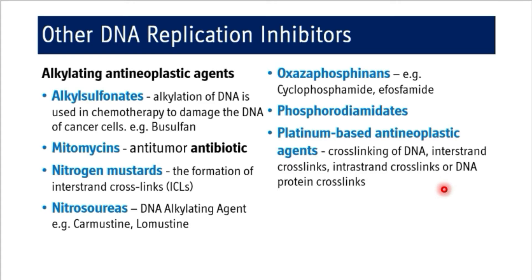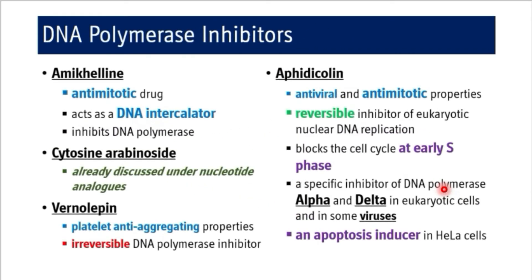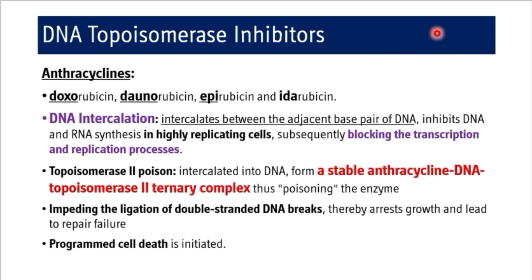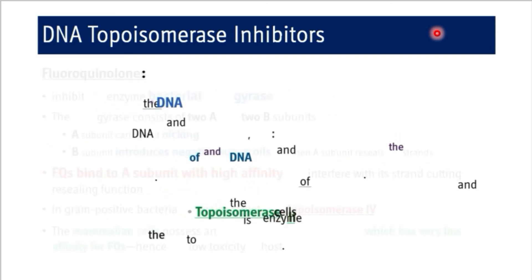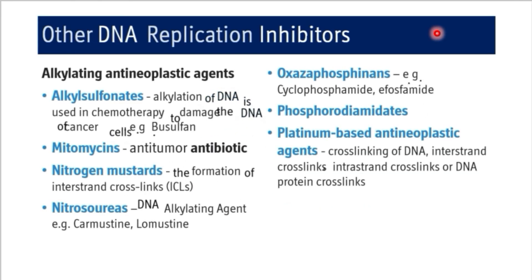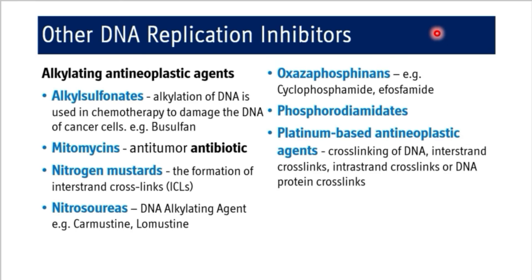In summary, the DNA replication inhibitors are: DNA polymerase inhibitors — amychelline, cytosine arabinoside, vernolepene, and afidicholine; DNA topoisomerase inhibitors — anthracyclines and fluoroquinolones; and alkylating agents that introduce inter- or intra-strand crosslinks or DNA-protein crosslinks — including alkylsulfonates, mitomycin, nitrogen mustards, nitrosoureas, oxazaphosphorines, phosphorodiamidates, and platinum-based antineoplastic agents. At the end of this session, you should be able to enumerate these DNA replication inhibitors.